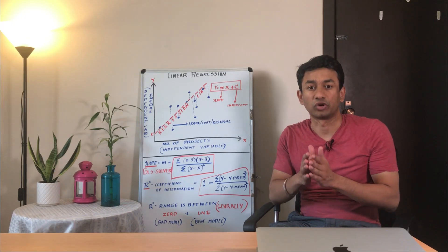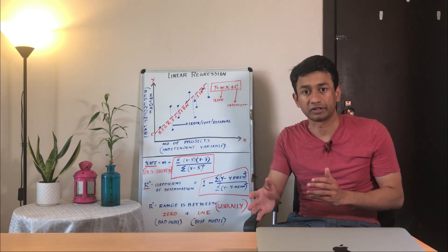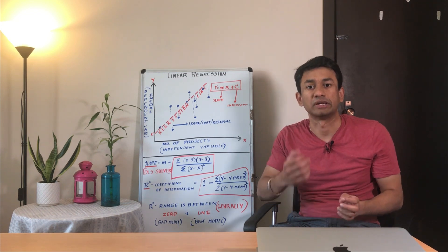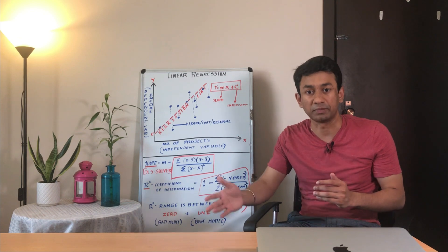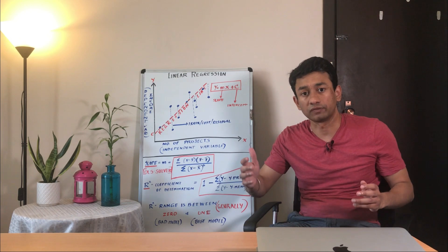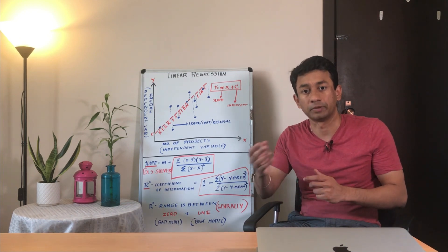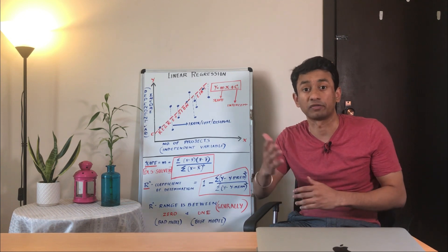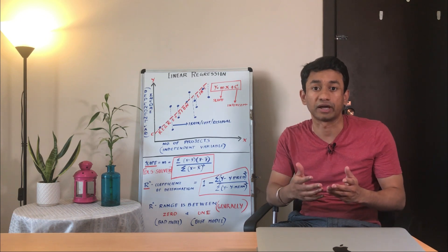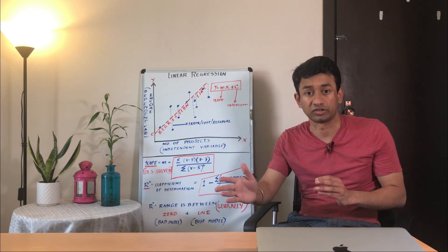Linear regression model is commonly used in order to make a prediction. For example, we want to predict the income of a particular person based on input variables such as age, number of years of experience, number of projects the person has implemented, and the location. We use all these various input parameters in order to make the prediction. It can also be used for problems like how much loan a particular customer would require — a use case for banking.